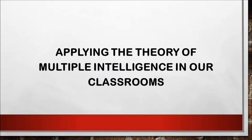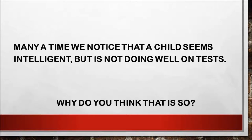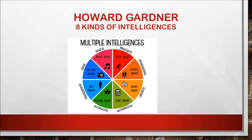In this video we learn about how to apply the theory of multiple intelligences in our classrooms. Many a time we notice that a child seems intelligent but is not doing well on tests. We are all aware of Howard Gardner's theory of multiple intelligences, where he talks about eight kinds of intelligences: kinesthetic, interpersonal, linguistic, mathematical, naturalistic, intrapersonal, visual, and musical.